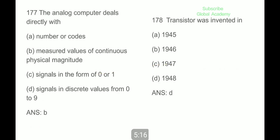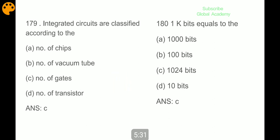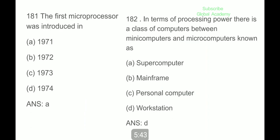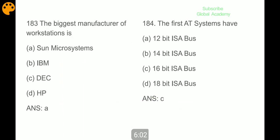Analog computers deal directly with measured values of continuous physical magnitudes. Transistors were invented in 1948. Integrated circuits are classified according to number of gates. 1K bits is equal to 1024 bits. The first microprocessor was introduced in 1971. In terms of processing power, there is a class of computers between minicomputers and microcomputers known as workstations. The biggest manufacturer of workstations is Sun Microsystems. The first AT systems have 16-bit ISA bus.